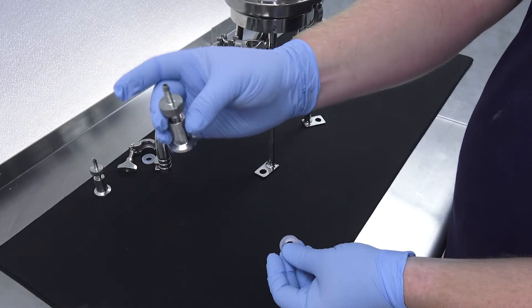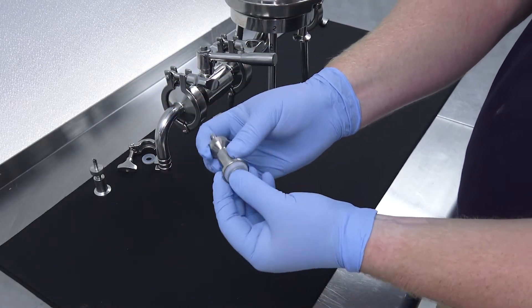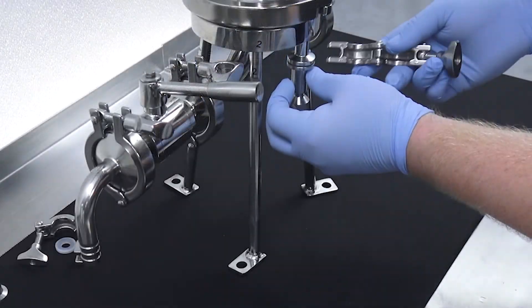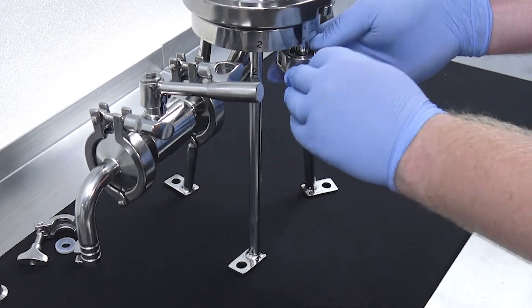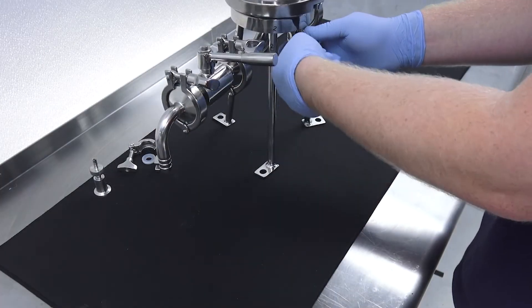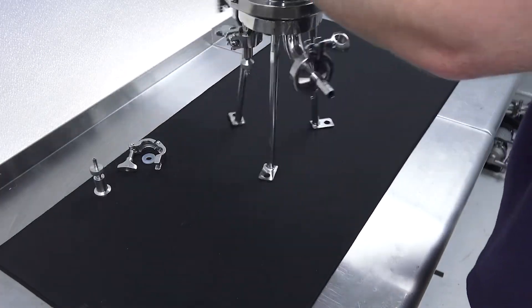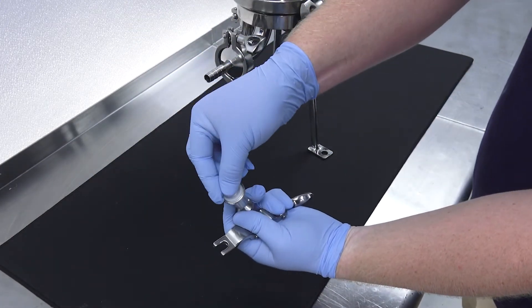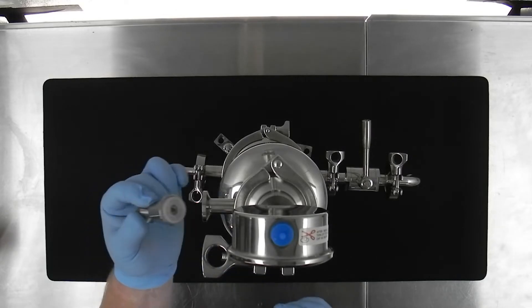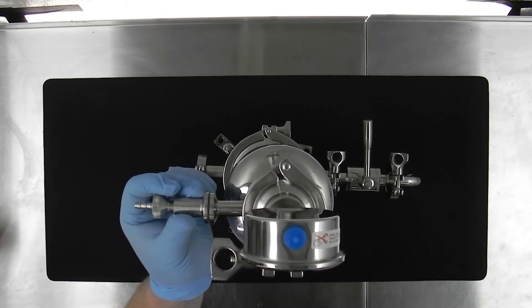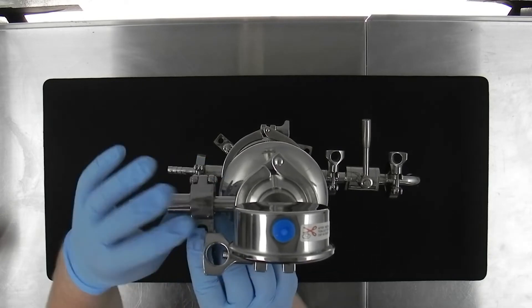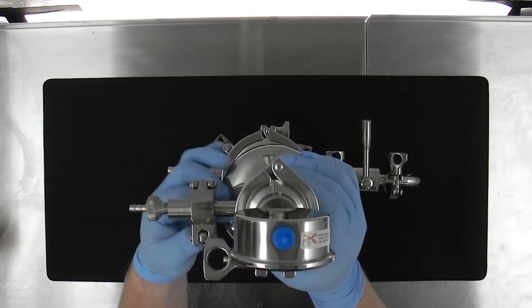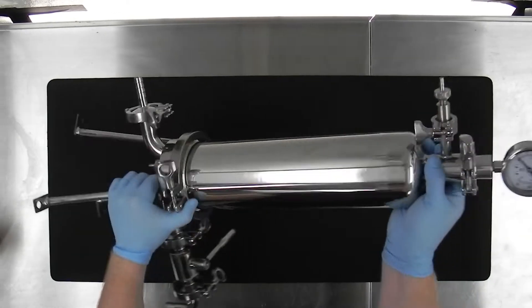Now it's time to install the bleed and drain valves. Install the bottom drain valve, then install the top valve, which is the bleed valve. The drain valve will remain closed during operation. The bleed valve is necessary to remove air from the housing.